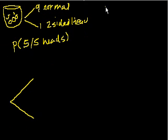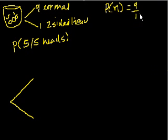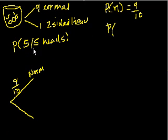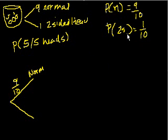So what's the probability that I get a normal coin? Well, there are nine normal coins out of 10 equally likely coins, so the probability of a normal coin is 9 out of 10. And the probability of the two-sided coin — I'll call it '2s' — is 1 out of 10. I'm either going to get one or the other.